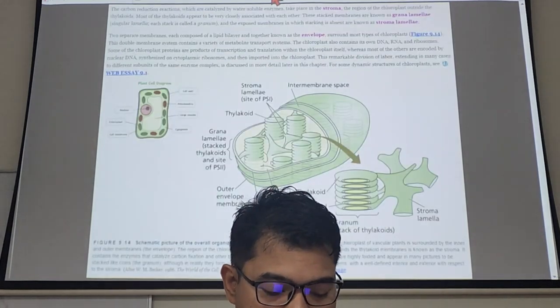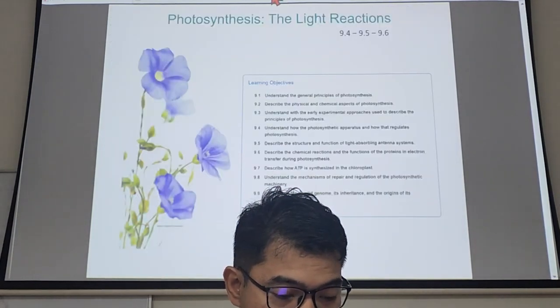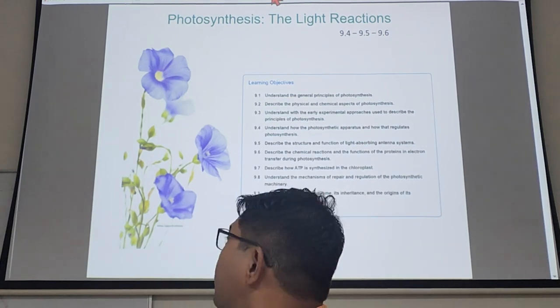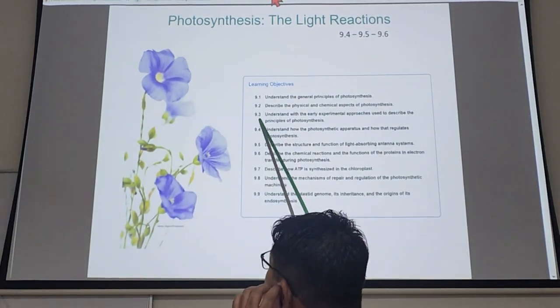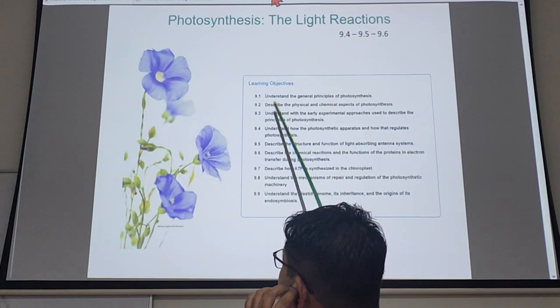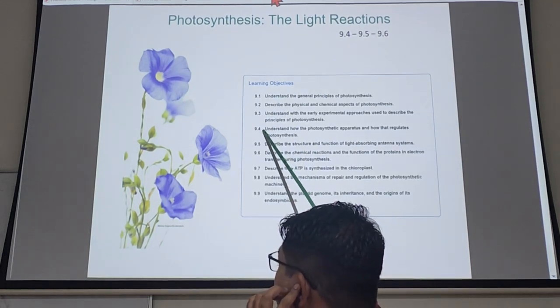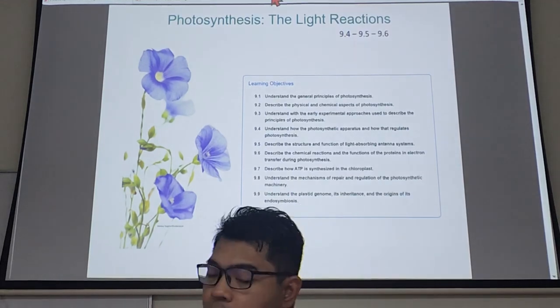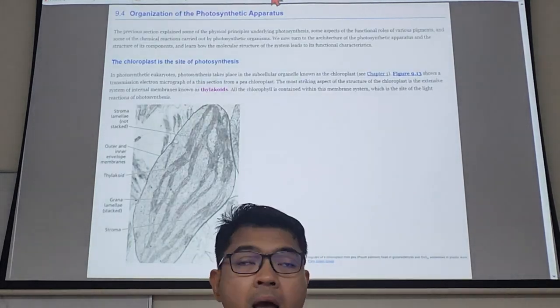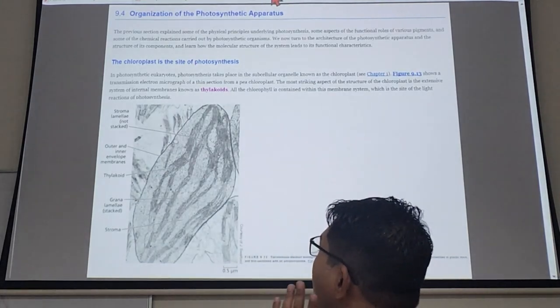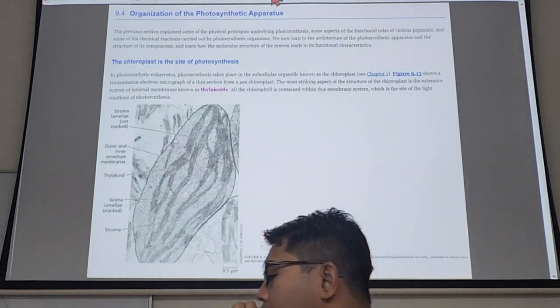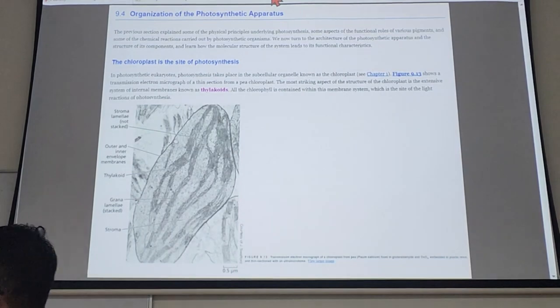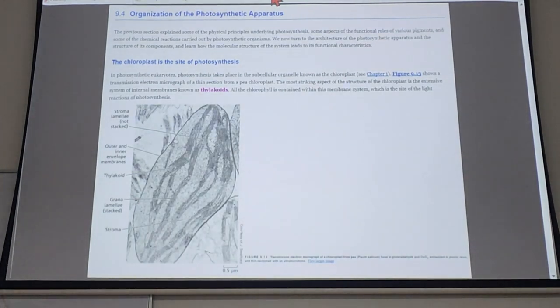So light reaction. We have covered 9.1 until 9.3, now we're going to continue from 9.4 until 9.9. I don't know, maybe we'll only finish up to 9.5. Let's see. Number one, what you need to understand is the organization of photosynthetic apparatus. This is very important, this is the basic of photosynthesis.